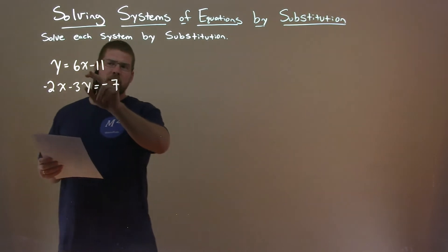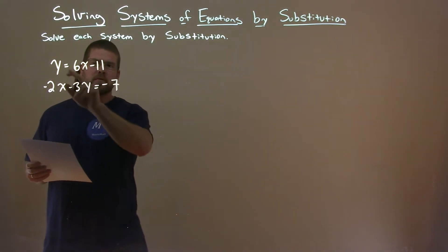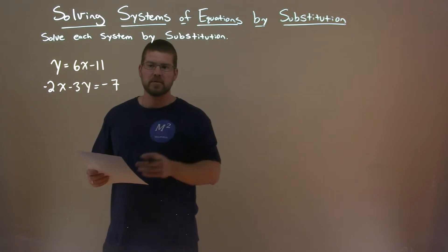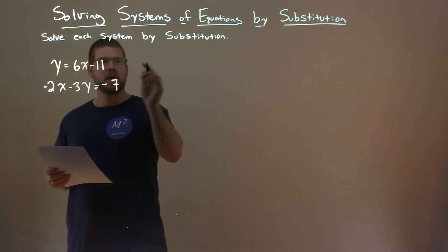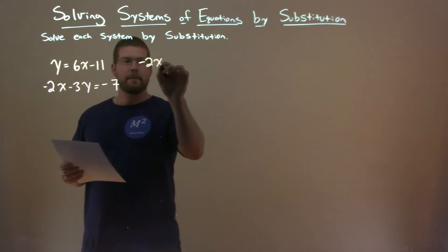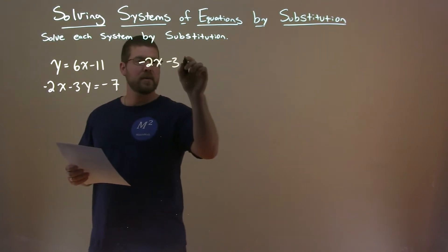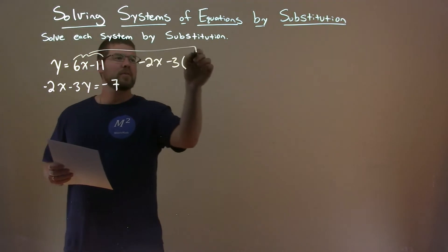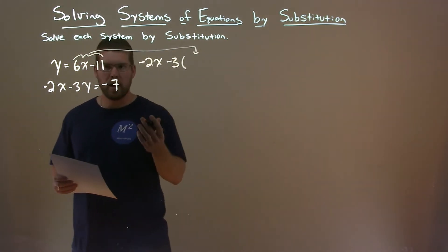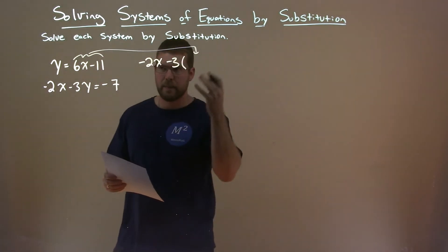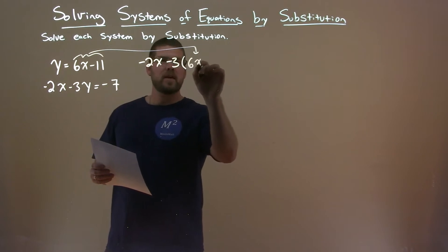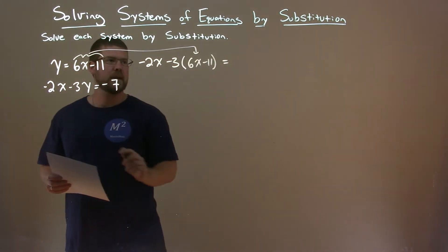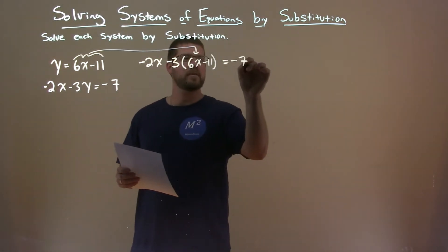What I do first is look at my two equations. The first one already has a variable by itself, which helps us here. So I take the second equation, minus 2x minus 3, and then instead of y, I'm going to plug in this value for that y, because y equals 6x minus 11. 6x minus 11 here. Then we finish out the second equation, equals minus 7.